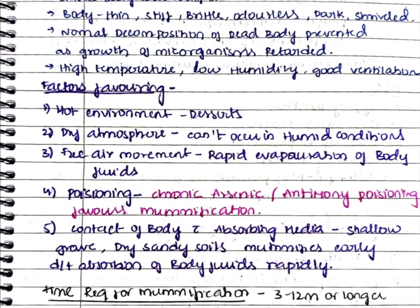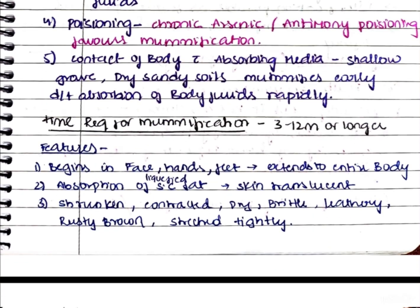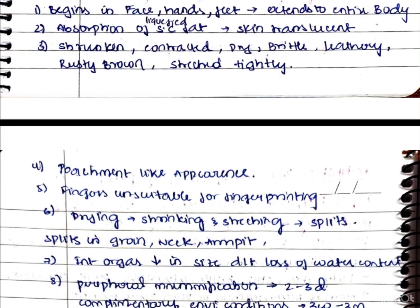The time required for mummification is usually 3 to 12 months, or it can take longer. Features begin from the face, hands, and feet, then extend to the entire body. Absorption of liquefied subcutaneous fat leads to translucency of the skin; the skin appears shrunken, contracted, dry, brittle, leathery, and rusty-brown, with a parchment-like appearance. Fingers become unsuitable for fingerprinting, and drying and stretching cause splits in the groin, neck, and armpit regions.